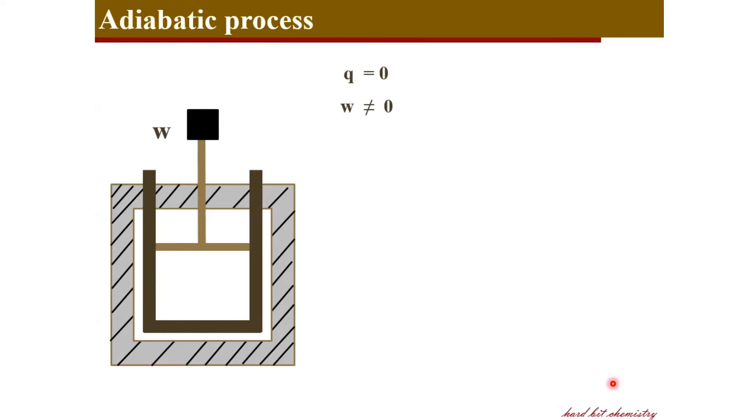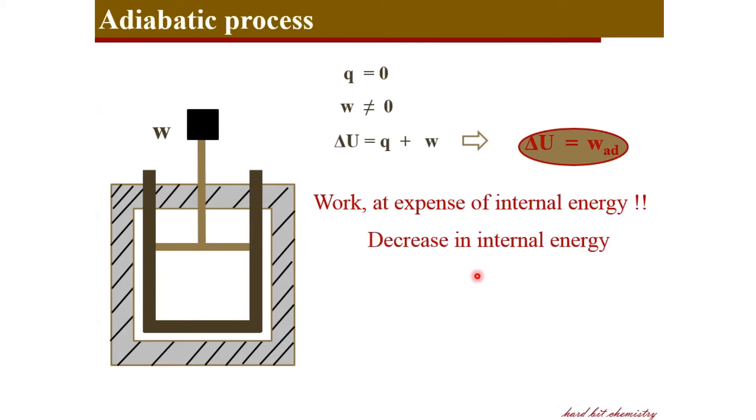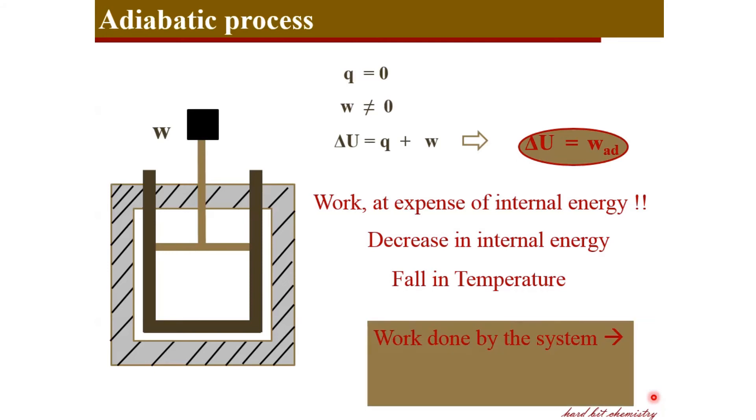That means a non-zero work exists, and according to the first law, we will reach that the change in internal energy during the adiabatic process equals the work. That is, work is done at the expense of internal energy in an adiabatic process. There is a decrease in internal energy when the work is done by the system, that means a fall in temperature can be noted. Work done by the system is done in the expenditure of kinetic energy of molecules. A fall in kinetic energy results in a fall in temperature during the adiabatic process.